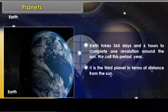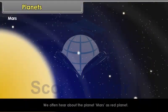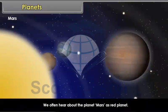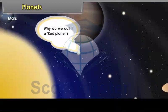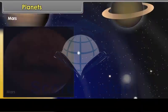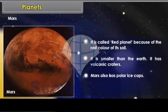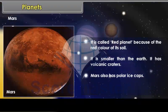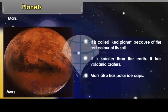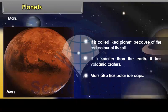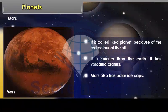Mars. We often hear about the planet Mars as red planet. Why do we call it a red planet? It is called red planet because of the red color of its soil. It is smaller than the Earth. It has volcanic craters. Mars also has polar ice caps.